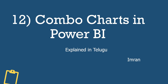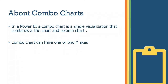Generally, we don't have any name called 'Combo Chart' in the Power BI visualization section. But Combo Charts are nothing but a combination of a line chart and a column chart. A Combo Chart is a single visualization that combines a line chart and a column chart, and it can have one or two Y-axes.